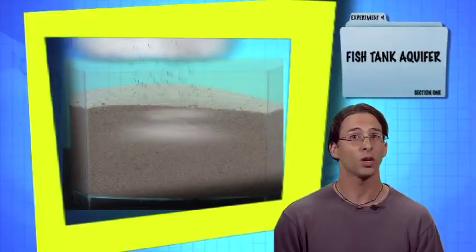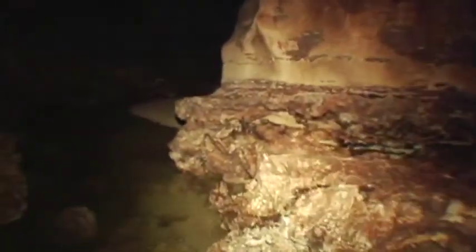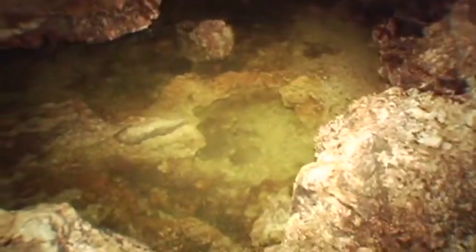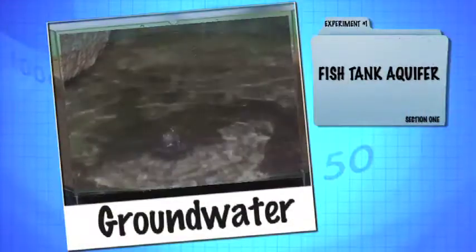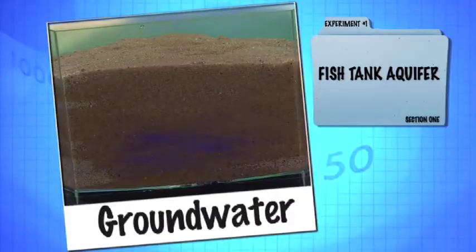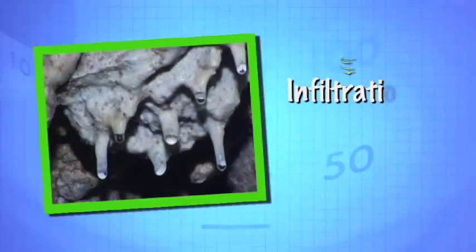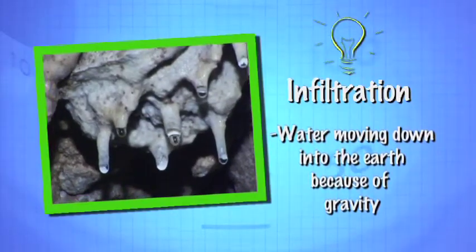This is how groundwater works. Groundwater is any water that's below the surface. Often, it's flowing. When it rains, the water infiltrates down through the rock until it reaches some layer it can't go through — in this case, the bottom of the fish tank — and it gathers in the spaces between the sand grains. Infiltration is water moving down into the earth because of gravity. In sedimentary rocks like sandstone, the sand grains do not fit tightly together, and water gathers in the tiny spaces between the sand grains.